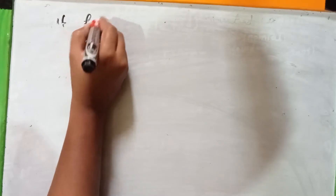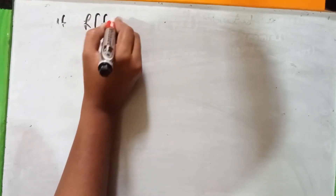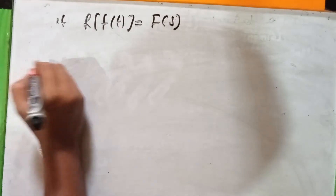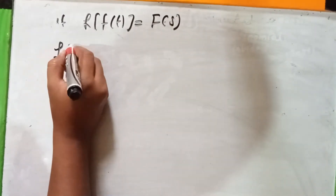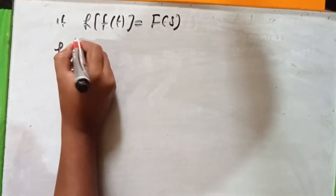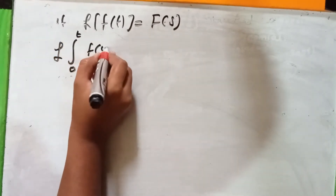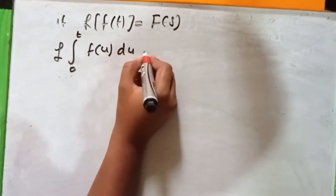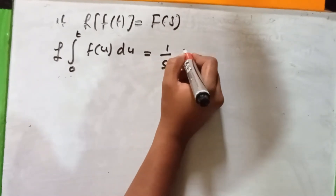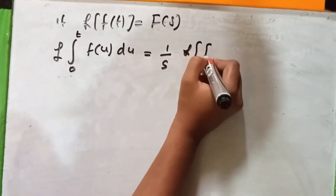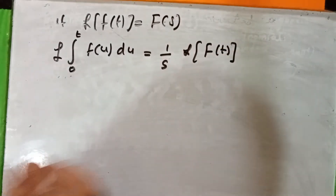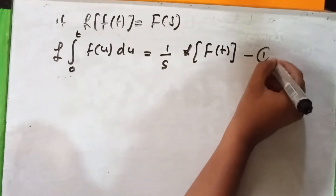If Laplace of f of t is equal to F of s, then Laplace of the integral from 0 to t of f of u du is equal to 1 over s times Laplace of f of t. This is equation number 1.